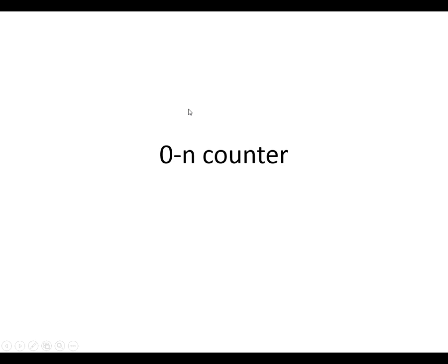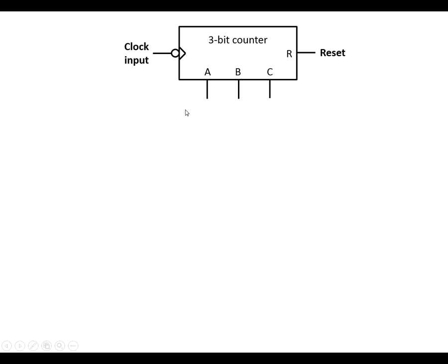0 to N counter. I'm going to show a 3-bit counter using this symbol here. We've got the clock input going into the clock input for the flip-flop. We've got the circle here to show that it's the falling edge of the clock that makes this count up by 1 each time, and we've got a reset input as well.